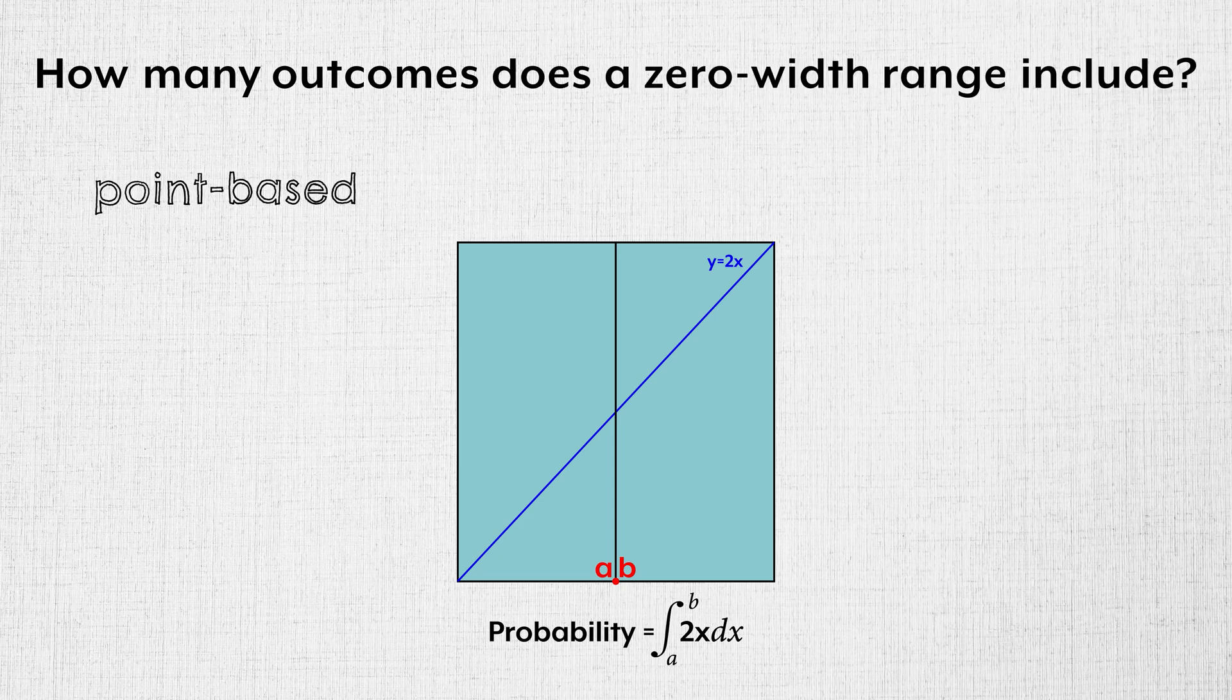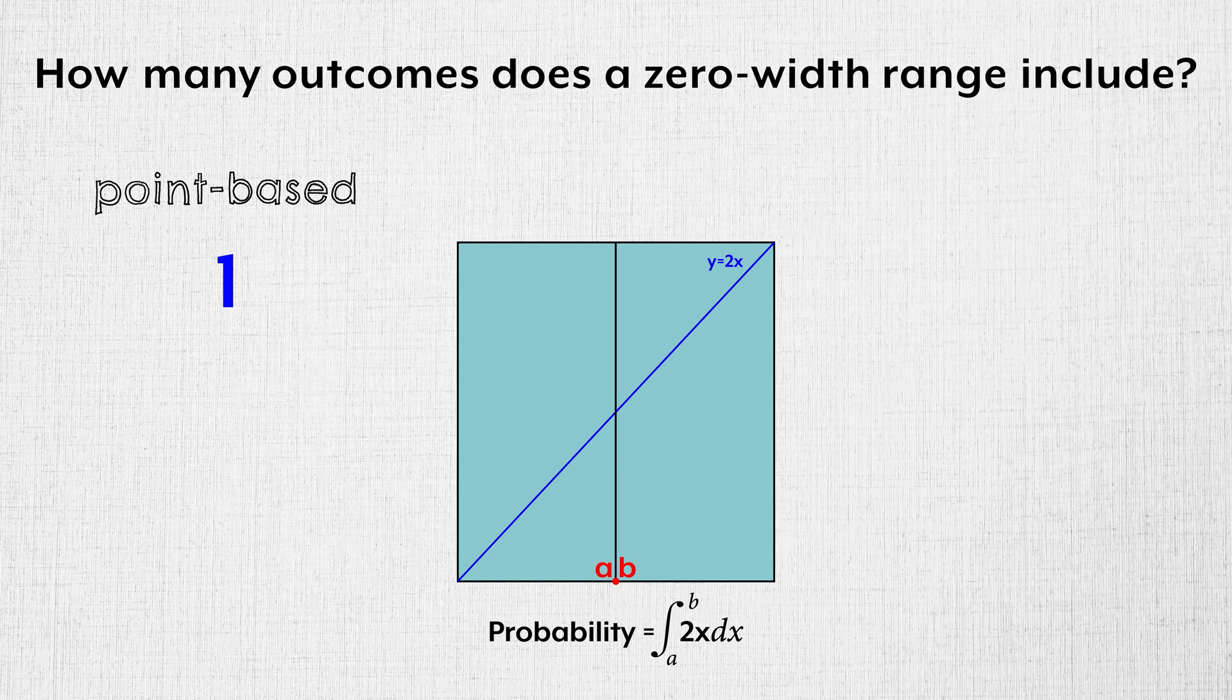With the point-based view, we have to say 1. A point exists within a zero width range, corresponding to a single outcome. So with the point-based view, it is meaningful to discuss the probability of a single outcome occurring. It has a probability of zero.